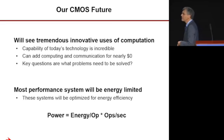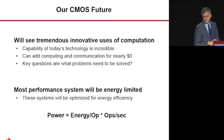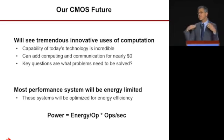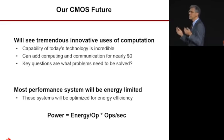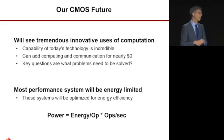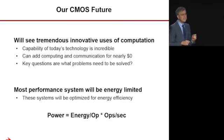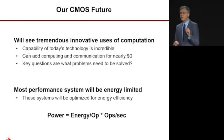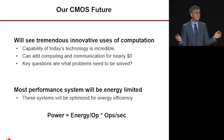If I'm right, computing will remain in CMOS and we'll have to deal with its limitations. That has two ramifications: first, the reason it's hard to displace CMOS is because its capabilities are so amazing — we can build a computer and wireless communication device on a single chip of silicon, sell it for under a dollar, and still make money. There's a tremendous opportunity to innovate by figuring out how to make the world a better place by adding communication and computing to it.